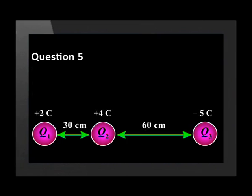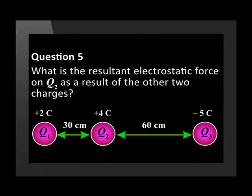Question 5. Three point charges are in a straight line. The charges and distances between them are shown. What is the resultant electrostatic force on Q2 as a result of the other two charges?